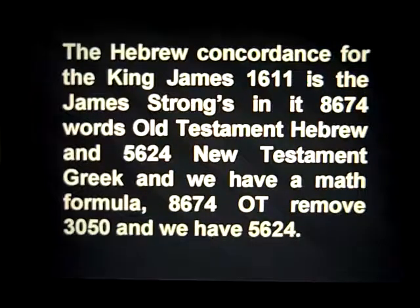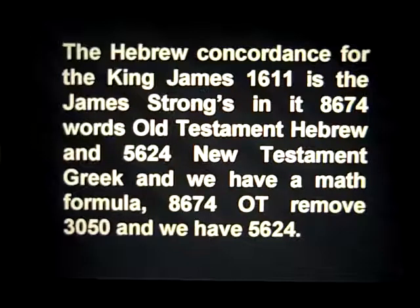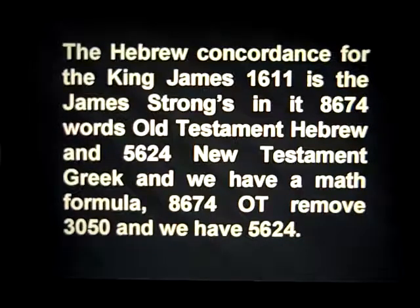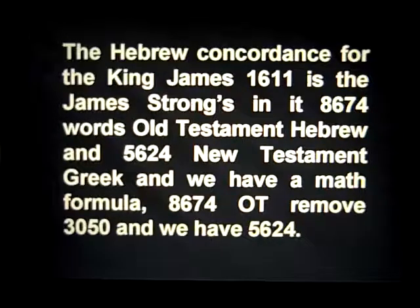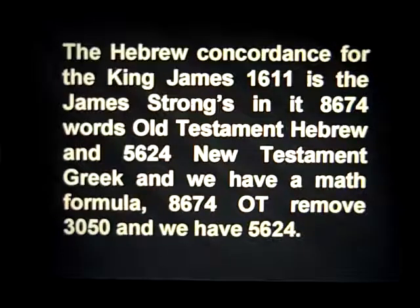The Hebrew concordance for the King James 1611 Bible is James Strong's Concordance, published in 1830. In it are 8,674 words of the Old Testament Hebrew and 5,624 words in the New Testament Greek.